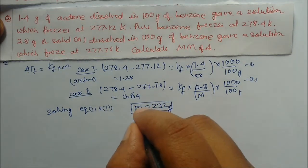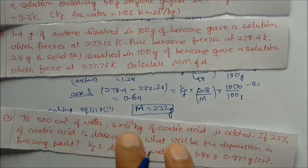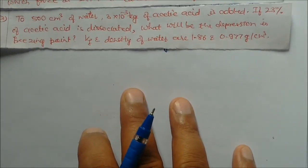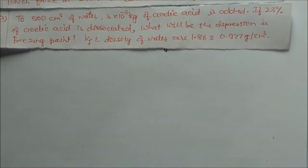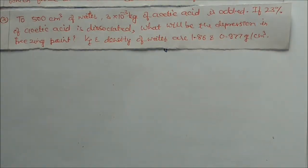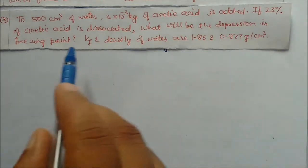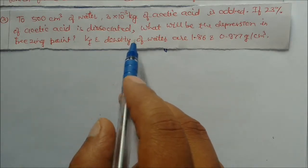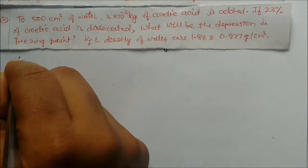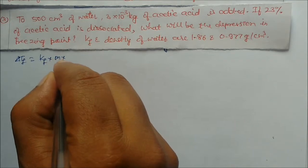Solving equations 1 and 2 gives M = 232 g/mol. This is the molar mass of solid A. Next problem: to 500 mL of water, 3 × 10⁻³ kg of acetic acid is added, and 23 percent of acetic acid is dissociated. What will be the depression in freezing point? Kf and density of water are given.